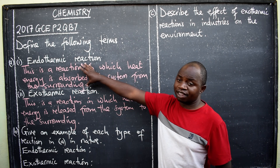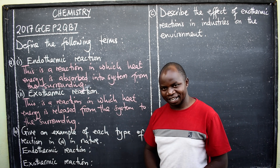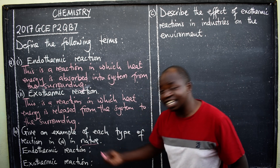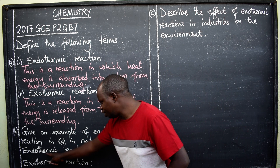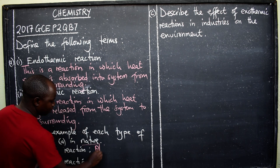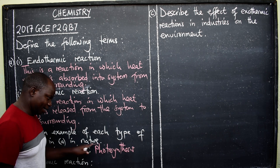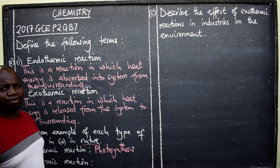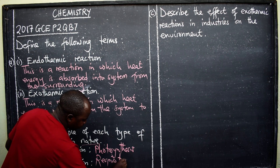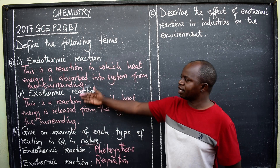Now we are told to give examples — one endothermic, one exothermic — and the key word here is 'in nature.' For endothermic, a very good example in nature is photosynthesis. For exothermic, you can say respiration. These two are the good examples in nature for endothermic and exothermic reactions.